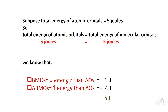Suppose the energy of the bonding molecular orbital is 1 joule and that of the anti-bonding molecular orbital is 4 joules — the total energy becomes 5 joules. The bonding molecular orbital at 1 joule is less than the atomic orbital energy, whereas the anti-bonding molecular orbital at 4 joules is higher, and the sum of these two energies is equal to the total atomic orbital energy.